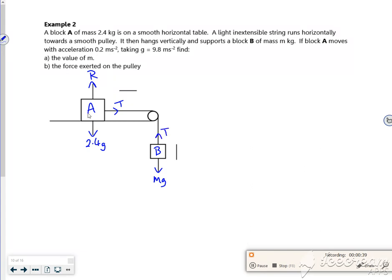When we release it, we're expecting block A to move forward and hopefully not slam into the pulley, and block B to move down. So it wants a value of M. Let's have a look.